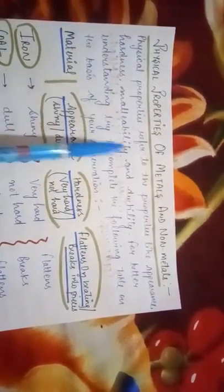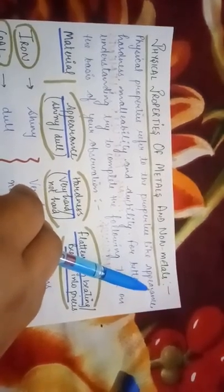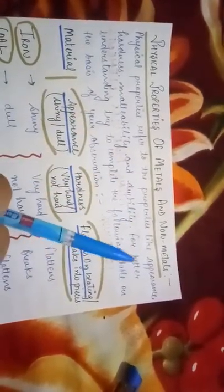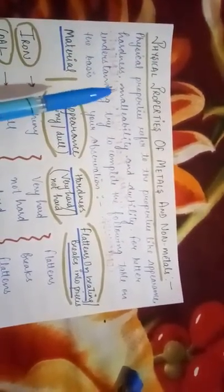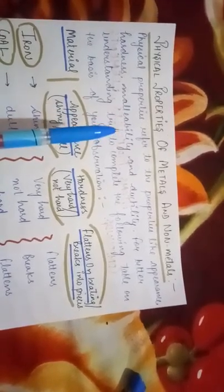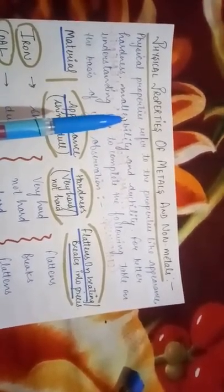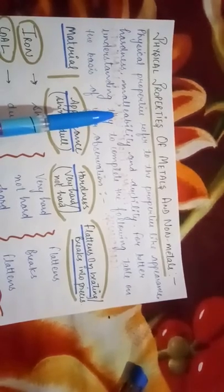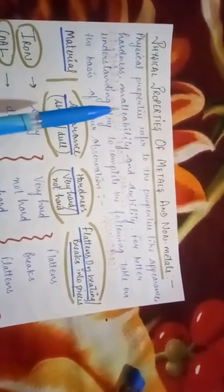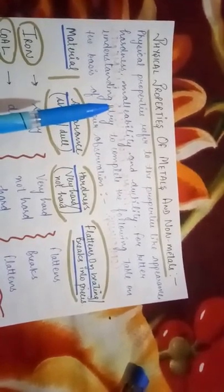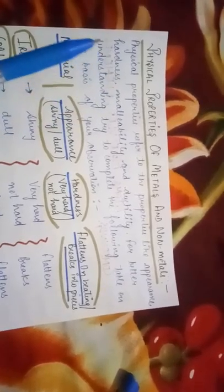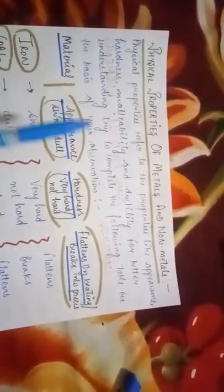Now what all these things are: appearance means how they are appearing, whether they are shiny or whether they have a dull look. Hardness means whether they are hard, soft, all these. Malleability refers to that whether they are malleable or not. Malleable means the substance which is malleable is a substance which can be beaten up into sheets.